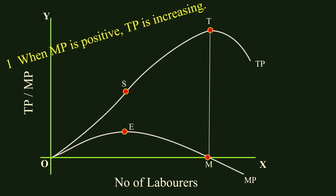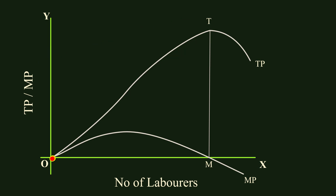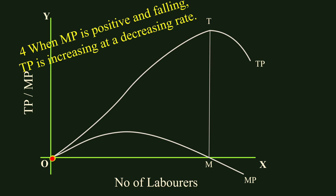Since the shape of the marginal product curve is totally different from the downward-sloping marginal utility and marginal revenue curves, depending upon the shape of the marginal product curve, we have to add two more relations. In the present case, the second relation becomes the fourth relation. Fourth relation: when marginal product is positive and falling, total product is increasing at a decreasing rate. In the segment EM of the marginal product curve, marginal product is positive and falling. So in the segment ST, total product is increasing at a decreasing rate.